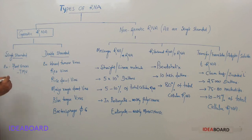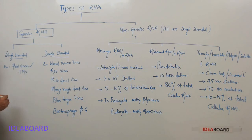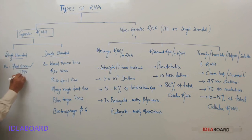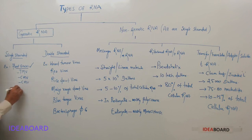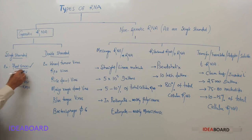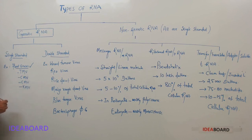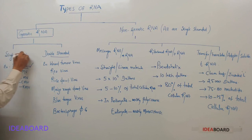Let us see the examples for single stranded RNAs. Single stranded RNA is commonly seen among plant viruses like tobacco mosaic virus (TMV), cabbage mosaic virus (CMV), cauliflower mosaic virus (CMV), and null coal mosaic virus (KMV). These are all plant viruses, and in these plant viruses the RNA is single stranded.